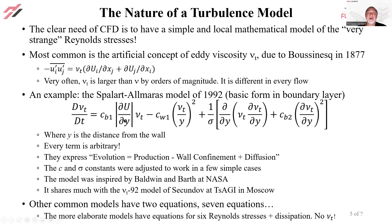There's a production term. Shearing, dU/dy, creates turbulence. We know that. So here it directly just multiplies νt.